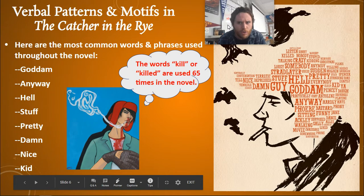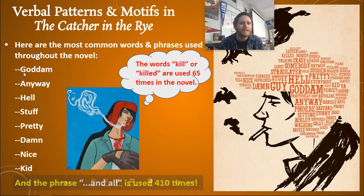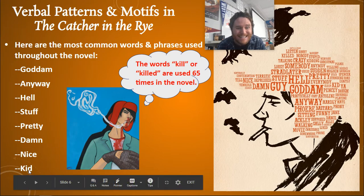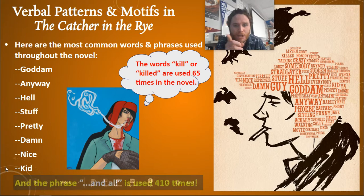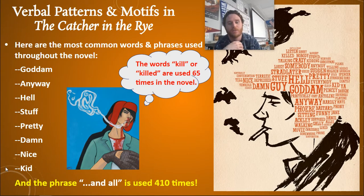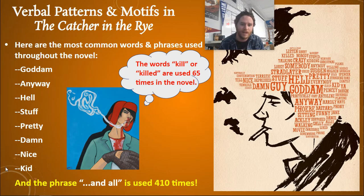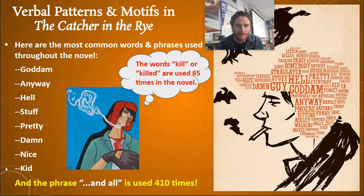Verbal patterns and motifs I've noticed in the book: gosh, damn, anyway, hell, stuff, pretty, nice kid — these words show up a lot. The words 'kill' or 'killed' are used 65 times in the novel, and yes, I counted. The phrase 'and all' is used 410 times — without a doubt the most repetitive phrase in the book. Once you see it, you can't unsee it.